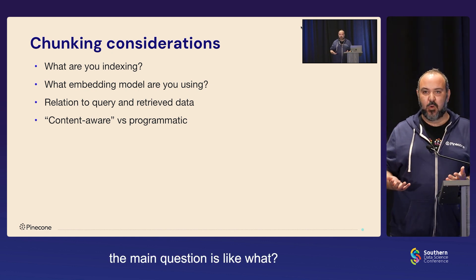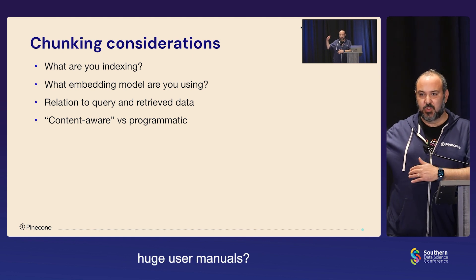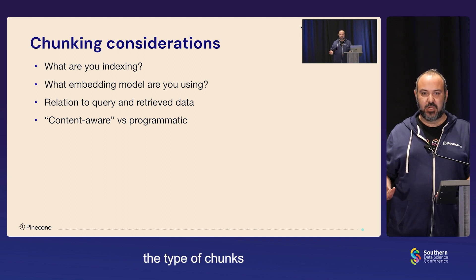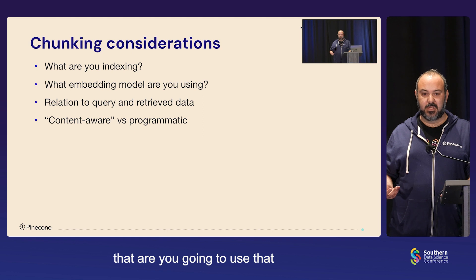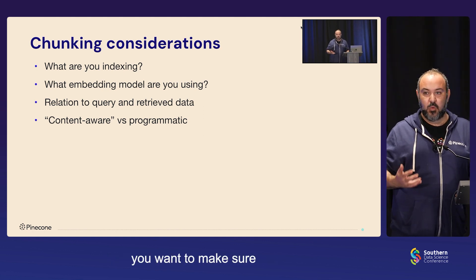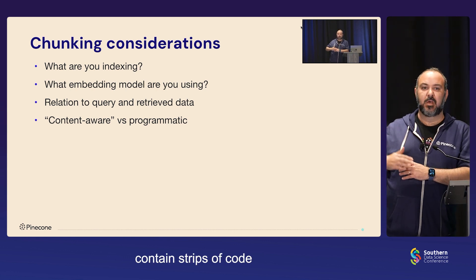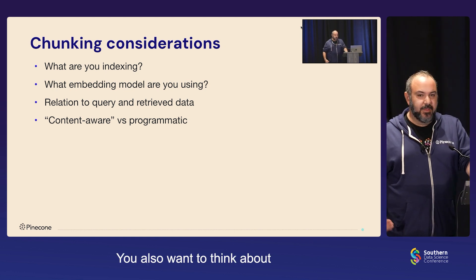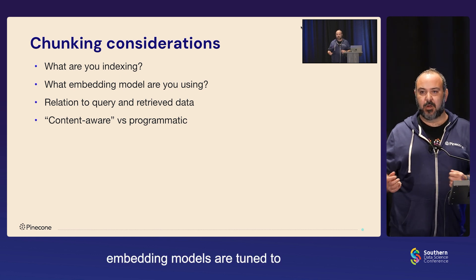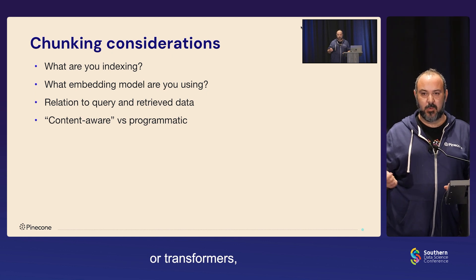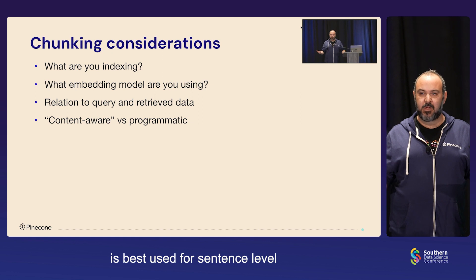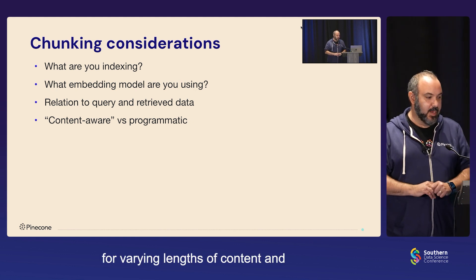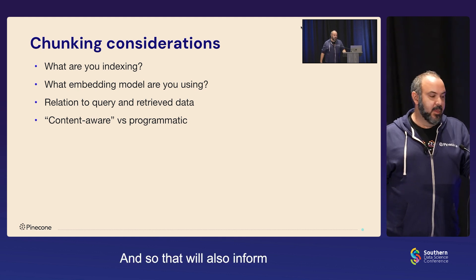What you're chunking matters a lot — huge user manuals, FAQs, or coding documentation all require different techniques. If your text contains code, make sure chunks contain complete strips of code with a beginning and end rather than splitting mid-function. You also want to think about which embedding model you're using, since different models are tuned for different content lengths. Sentence Transformers work best for sentence-level embeddings, while models like Ada-002 handle varying and much longer lengths of content. Finally, consider how users will query your data and whether you want laser-focused or broader responses.